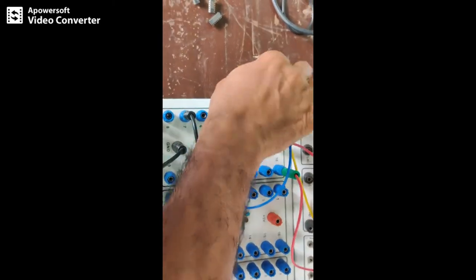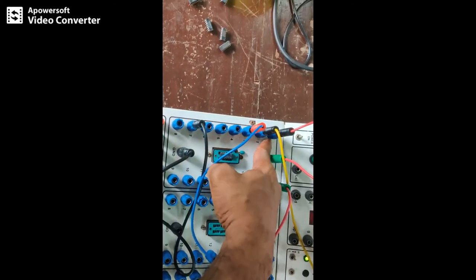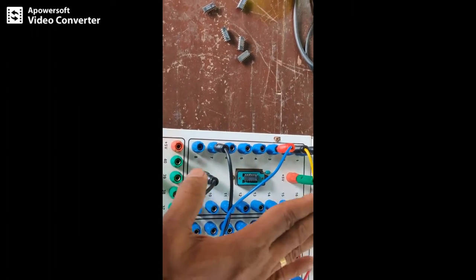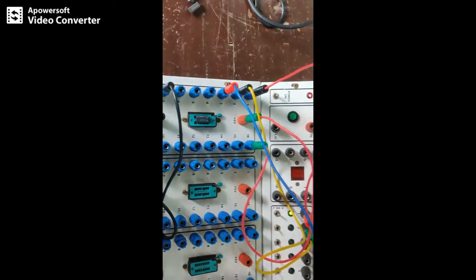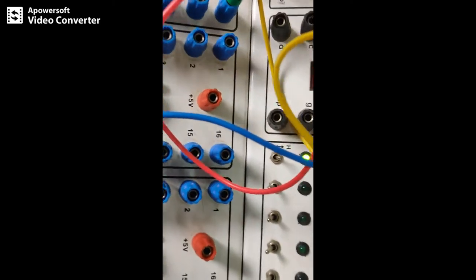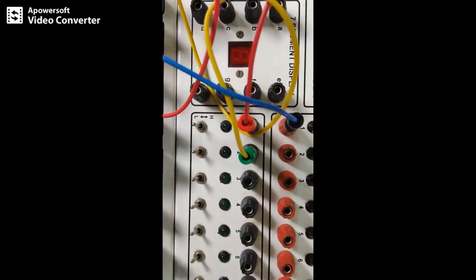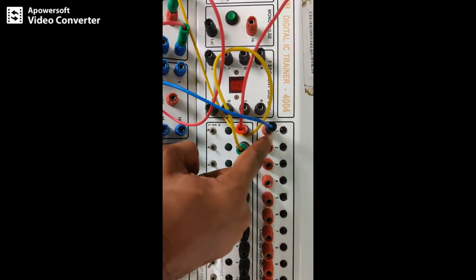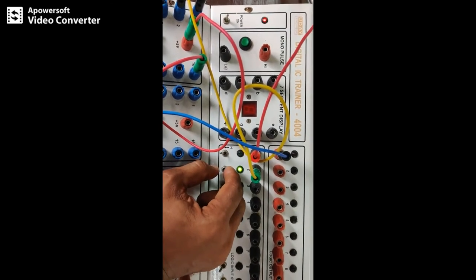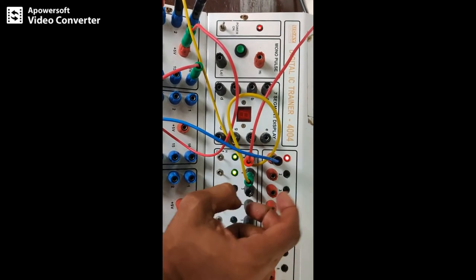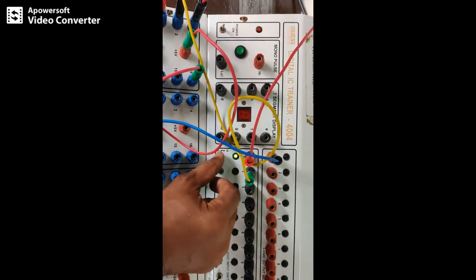I have done the connection now. This 7408 contains four gates, so in that one gate I am checking now. Pin number 1 and 2 are the input, 3 is the output. You can see here you have to give input and you have to see the output. For AND gate, if I give 0 0, output is 0. Then I will make 0 1, output is 0. Then 1 0, output is 0. 1 1, output is 1. Let me repeat: 0 0 output is 0, 0 1 output is 0, 1 0 AND gate output is 0, 1 1 output is 1. In this way you can execute various experiments.